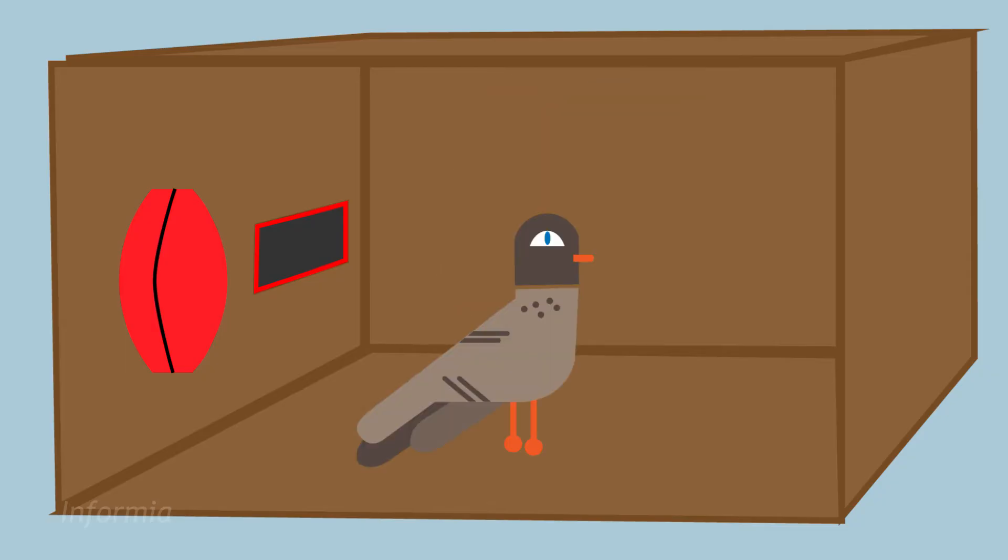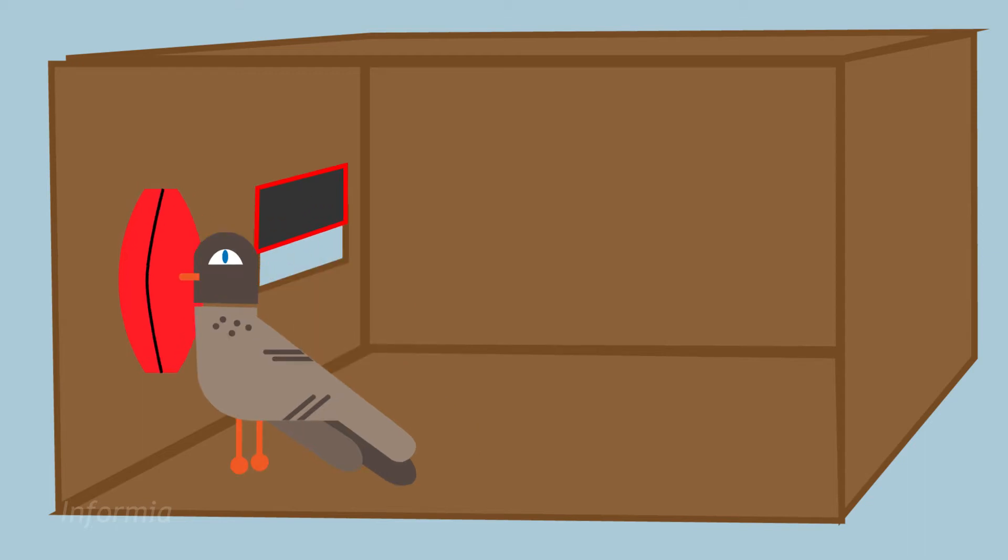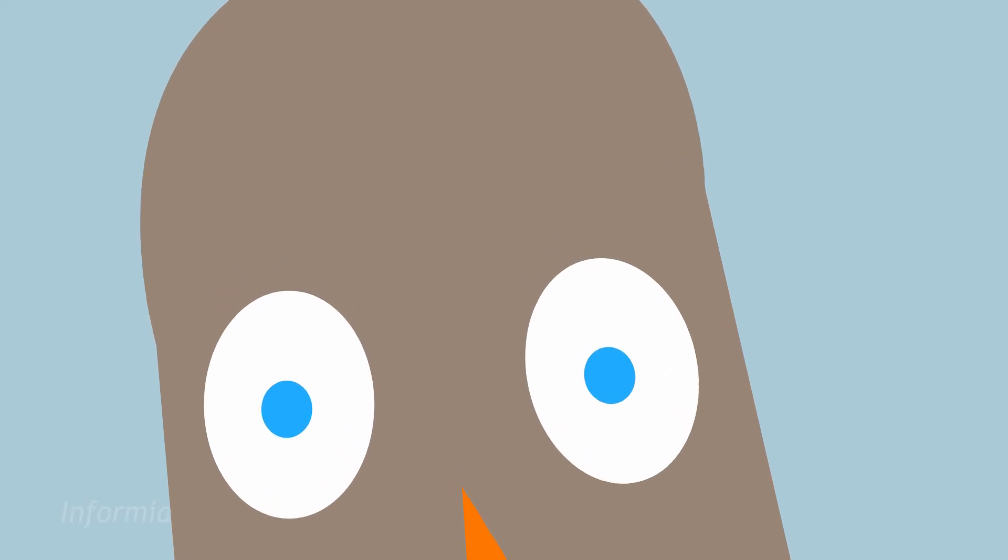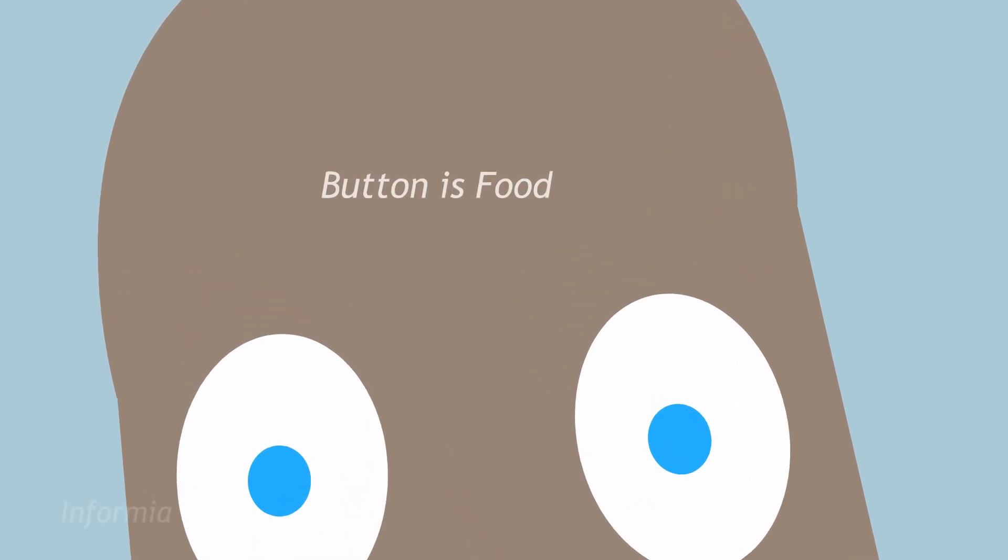Skinner started watching how the pigeon behaved. At first, the pigeon was acting normally. After some time, the pigeon got hungry. It randomly pecked the button, and a few pieces of food entered the box. The pigeon ate the food, and still hungry, looked over the box again. Then it decided to peck the button, and food entered the box a second time. Now, the pigeon is not a clever creature, but it could understand this. Pecking the button equaled food.